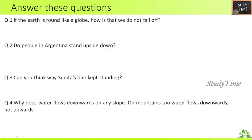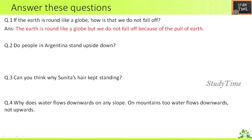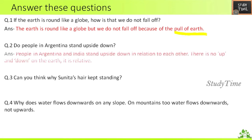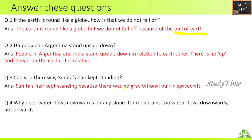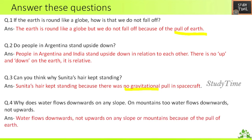Answer the questions: First — if the earth is round like a globe, how is it that we do not fall off? Because of the pull of the earth, that is gravitation. Second — do people in Argentina stand upside down? No, there is no up and down on earth; it is relative. Third — why did Sunita's hair keep standing? Because there was no gravitational pull in the spacecraft. Fourth — why does water flow downwards on any slope? Because of the pull of the earth.